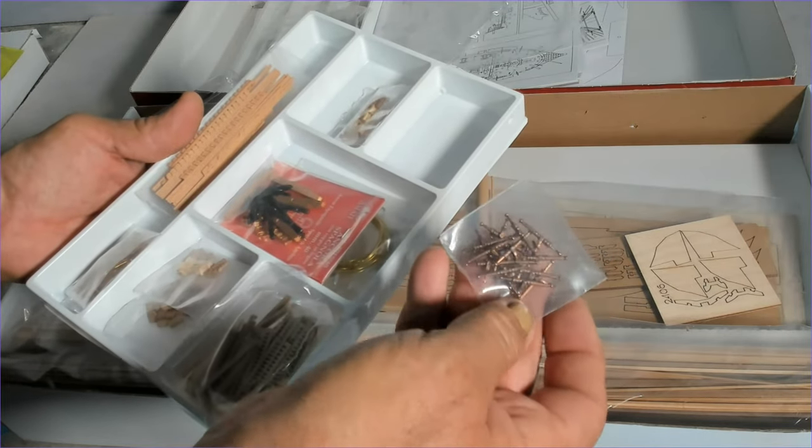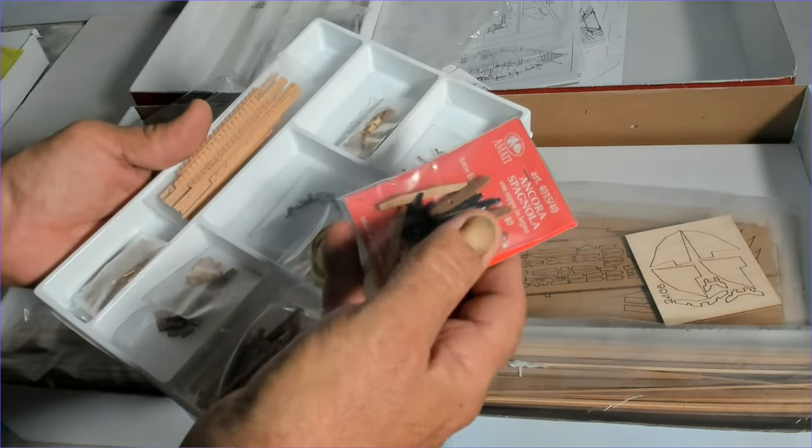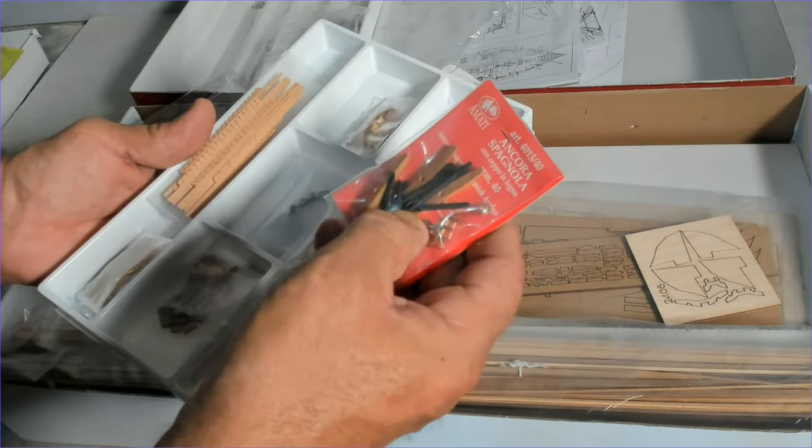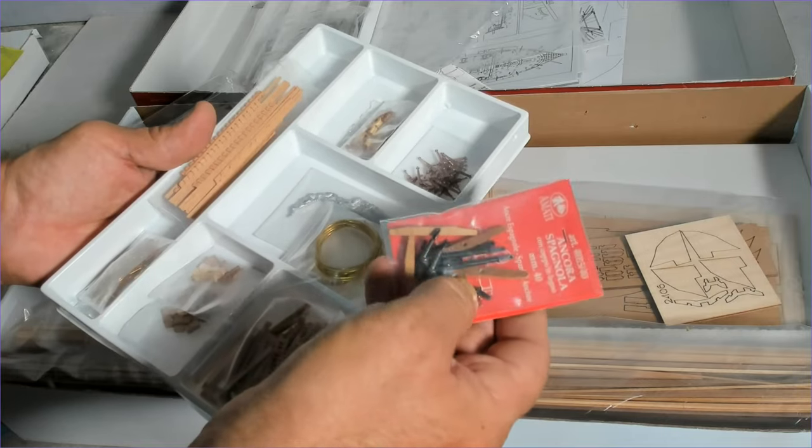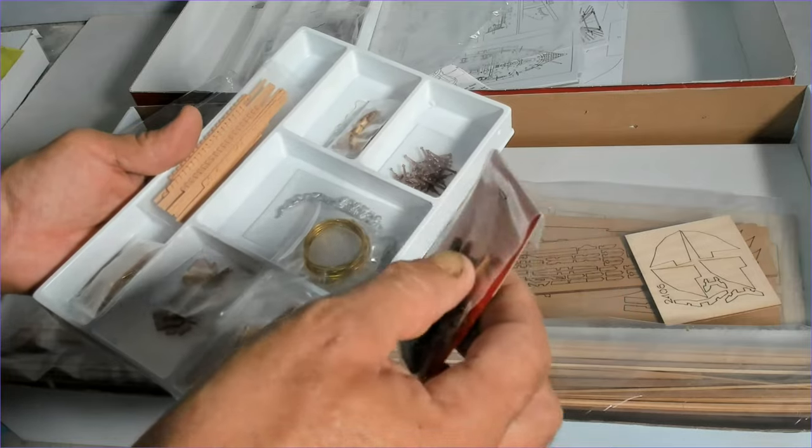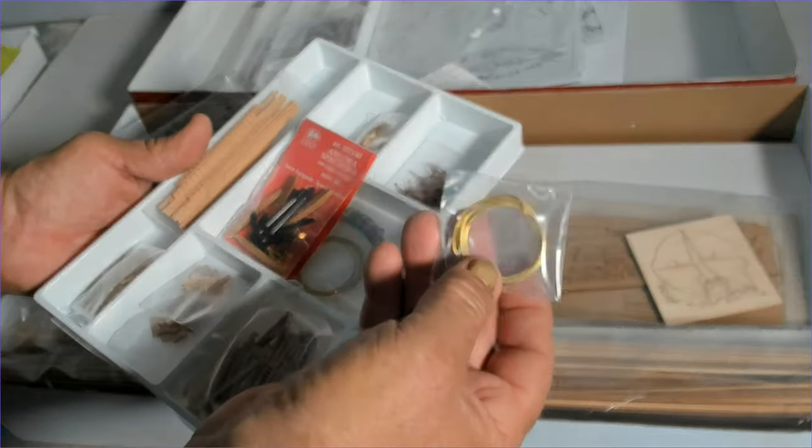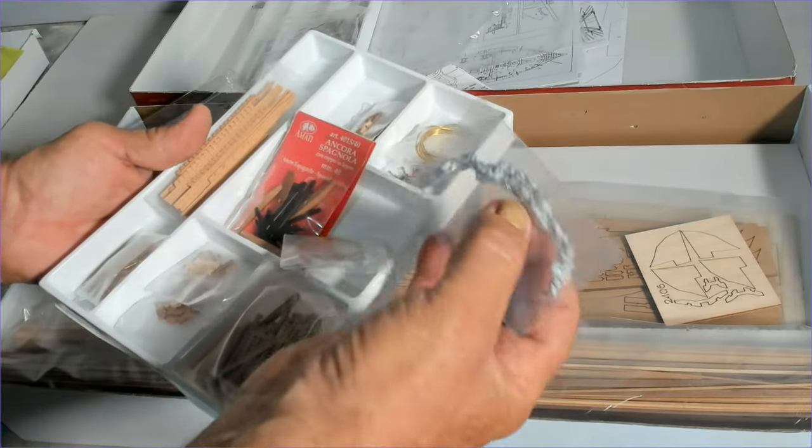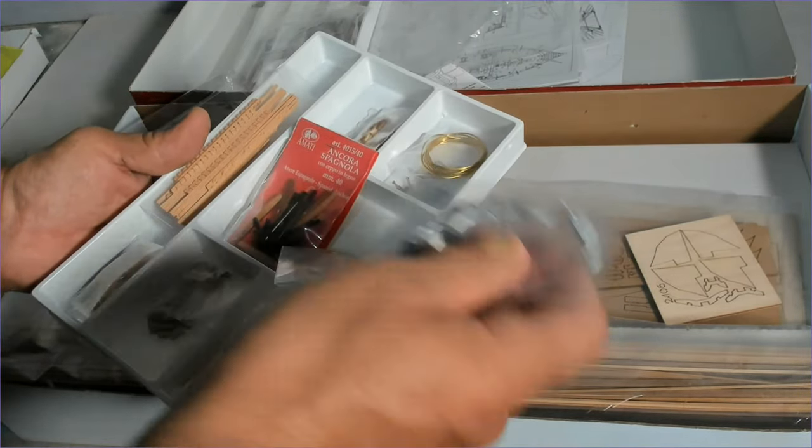Cannons or guns. Then we've got the anchors. The actual anchors, I don't think they're, well they might be metal, they look like plastic, but I believe the upgrade set had metal ones in there. We've got some brass wire, a couple of brass wires, and that would be a decoration that goes on the stern of the ship. So that'll be fun to paint.